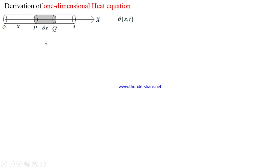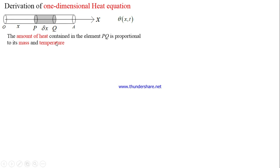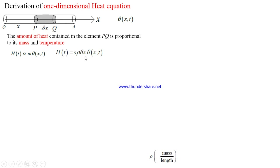We know that the amount of heat contained in the element PQ is proportional to its mass and temperature. That is, the heat H(t) is directly proportional to mass m into temperature θ(x, t). Since the density of the material equals mass per unit length, mass equals ρ·Δx. So H(t) = s·ρ·Δx·θ(x, t), where s is the proportionality constant called the specific heat of the material.